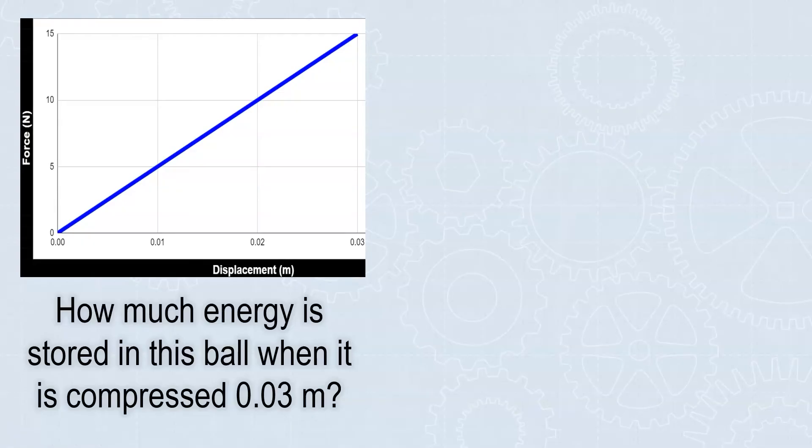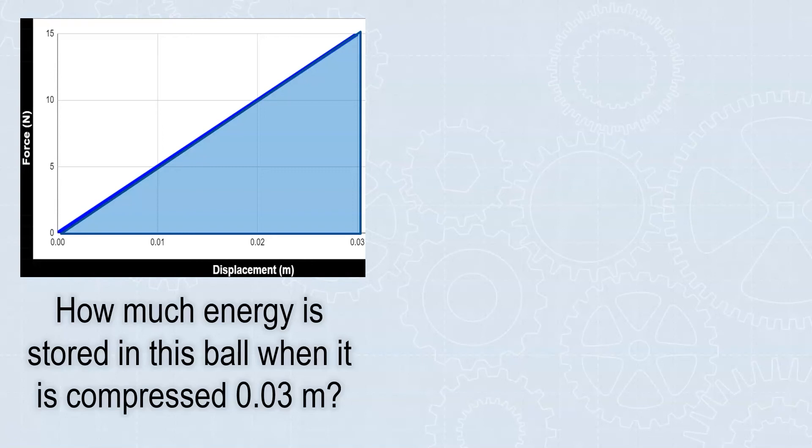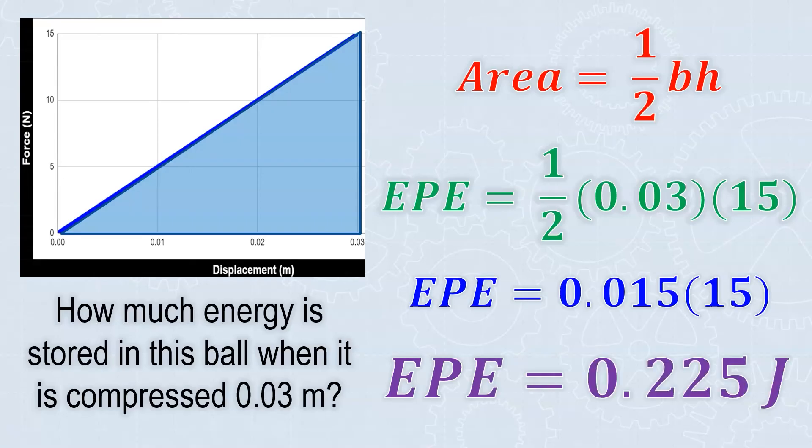Let's take a look at the data. We want to find how much energy is stored in the ball when it's compressed 0.03 meters. To find the energy from the graph, we take the area. That's a triangle, so it's 0.5 base times height. My base is 0.03 meters, the displacement it's compressed. My force at that point is 15 newtons. Multiply those together and you get an energy of 0.225 joules. That's how much elastic potential energy is stored in that ball when it's compressed.